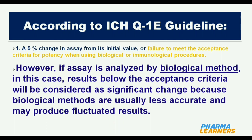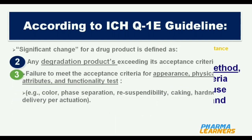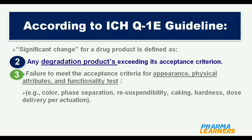The second criterion is any degradation products exceeding its acceptance criterion. The third is failure to meet the acceptance criteria for appearance and physical attributes.